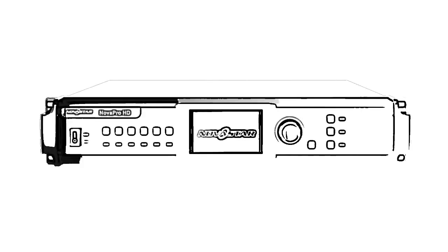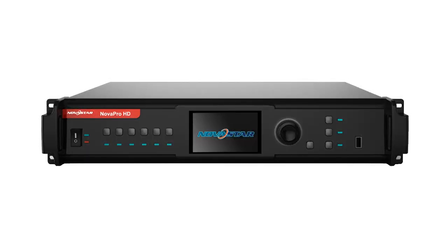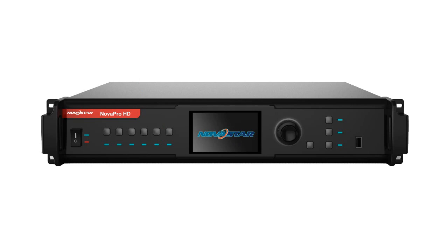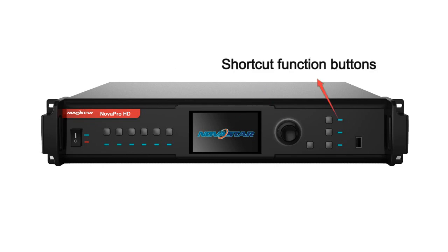This is the front interface of Nova Pro HD. We designed three parts. The first part is the shift buttons for switching video sources. The second part is the guide user interface with a LCD screen and a knob. The third part is the shortcut buttons for display control and PIP functions.